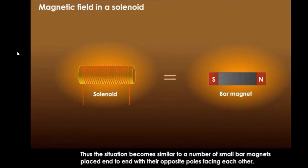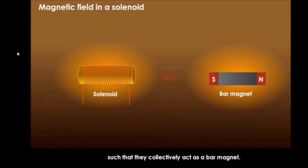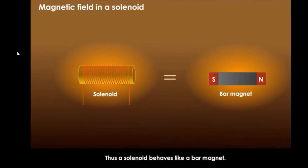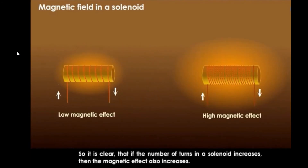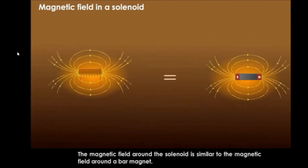Thus the situation becomes similar to a number of small bar magnets placed end to end with their opposite poles facing each other, such that they collectively act as a bar magnet. Thus a solenoid behaves like a bar magnet. It is clear that if the number of turns of the solenoid increases, then the magnetic effect also increases. The magnetic field around the solenoid is similar to the magnetic field around a bar magnet.